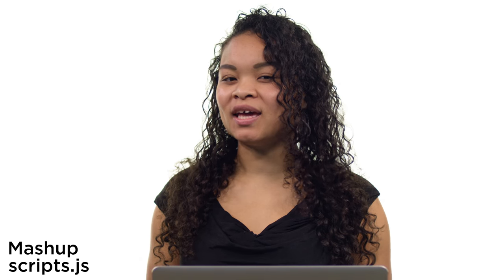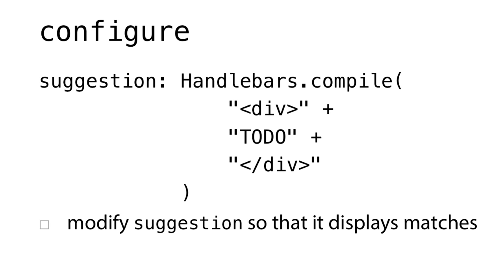Now let's move from the Python back end to the JavaScript front end. In scripts.js, there's just a small to-do for us in configure. Within the suggestion, you'll see that we concatenate HTML to put within the search bar — as users search, they'll see suggestions pop up. So it's up to us to modify suggestions so that it displays matches to whatever place the user might be searching up.